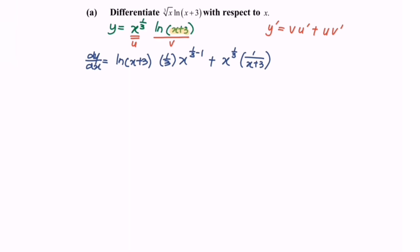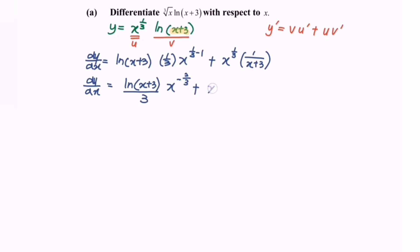Rewrite the expression: dy/dx is equal to ln(x + 3) multiplied by 1/3 times x to the power of negative 2/3, plus x to the power of 1/3 divided by (x + 3). Now rewrite the situation and equate the denominator.